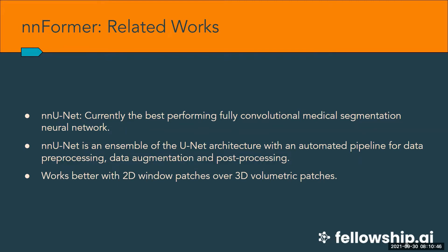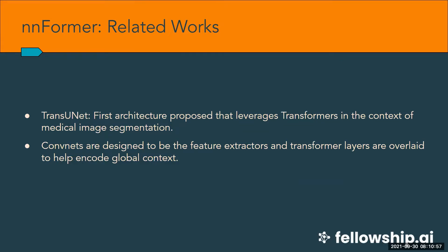The nnUNet architecture has an automated pipeline for data pre-processing, data augmentation, and post-processing. Experimentation finds that nnUNet works better with 2D window patches over complete 3D volumetric patches. Moving on to TransUNet: TransUNet exposed the potential of transformers in medical image segmentation. Here transformers were added to convnets for the first time for image segmentation. In TransUNet, the convnets act as feature extractors and transformers help encode global context. However, just one or two transformer layers aren't enough to fully entangle long-term dependencies with just convolutional representations.